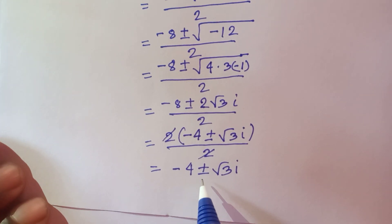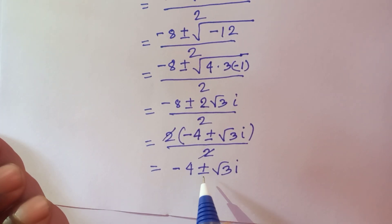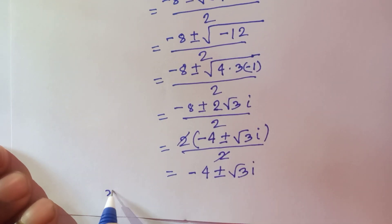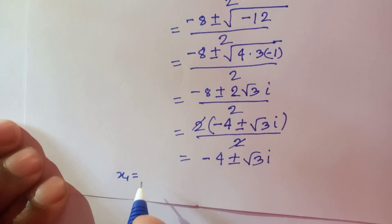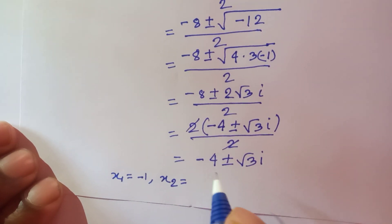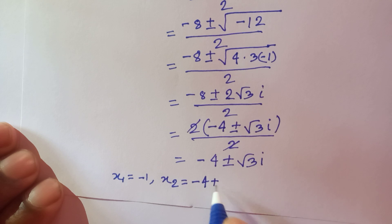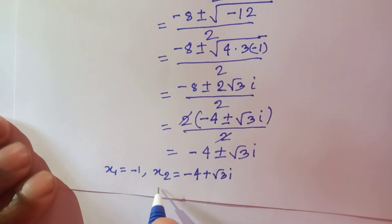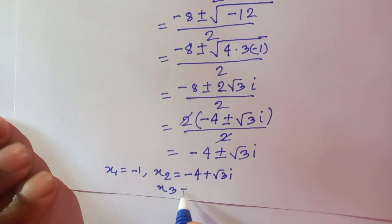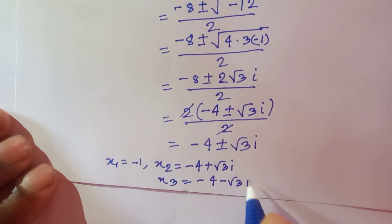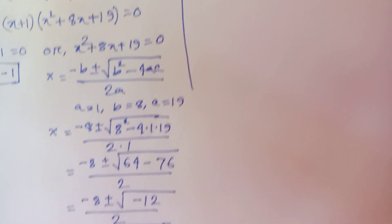We get minus 4 plus or minus root 3 i. Because of the plus or minus, we have two solutions: x₂ equals minus 4 plus root 3 i, and x₃ equals minus 4 minus root 3 i.